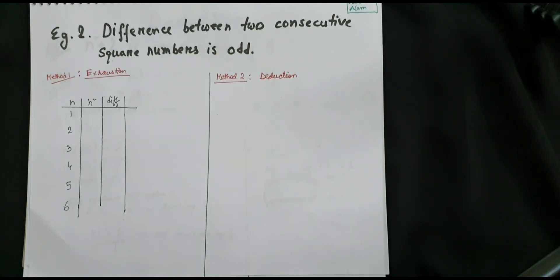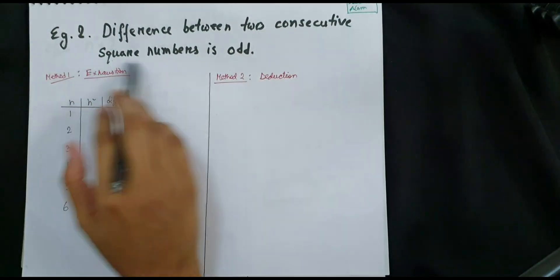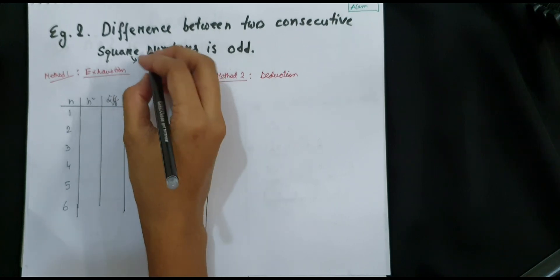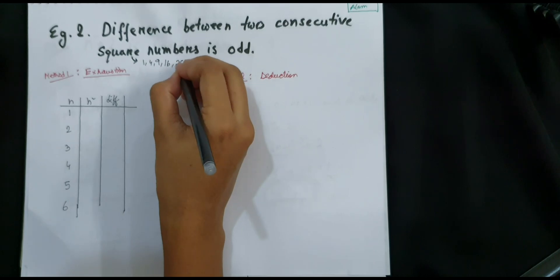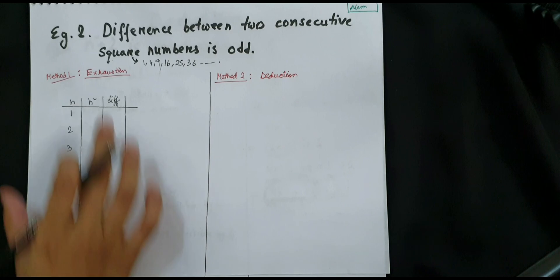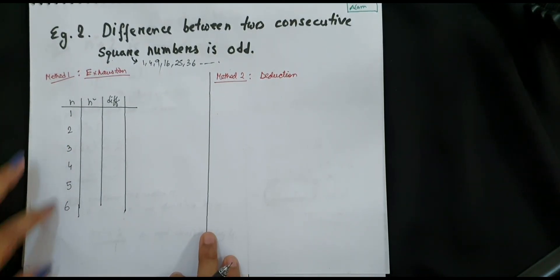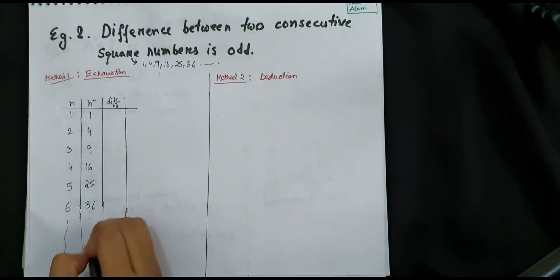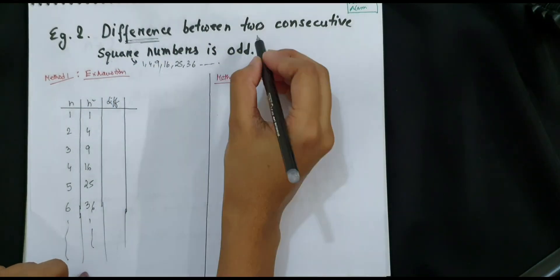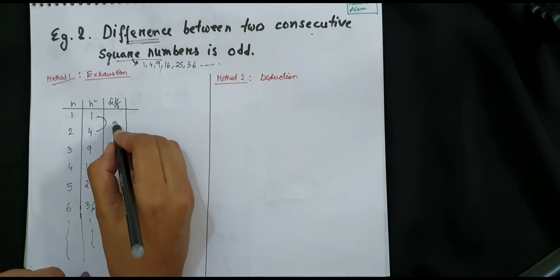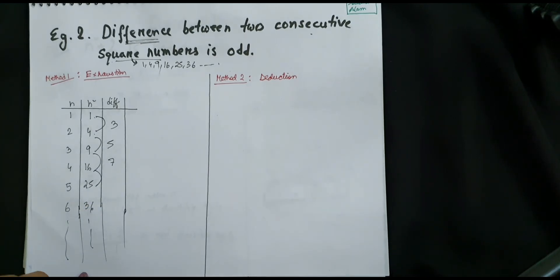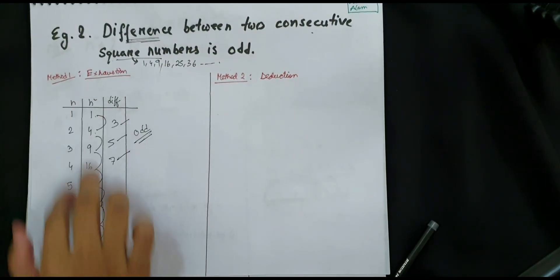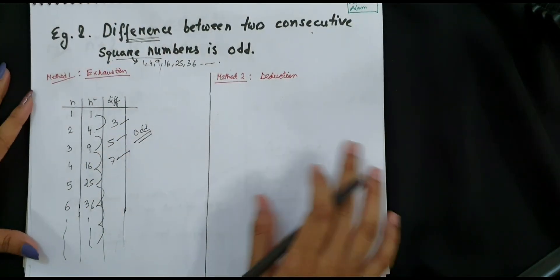We will solve another example: prove that the difference between two consecutive square numbers is odd. Square numbers are numbers whose square root is a whole number — 1, 4, 9, 16, 25, 36. First, using exhaustion, I'm taking different values of n from 1 to 6. The square numbers are 1, 4, 9, 16, 25 and the differences between consecutive ones are 3, 5, 7 — all odd numbers. Exhaustion is quite easy: just put values of n and check whether the condition holds.